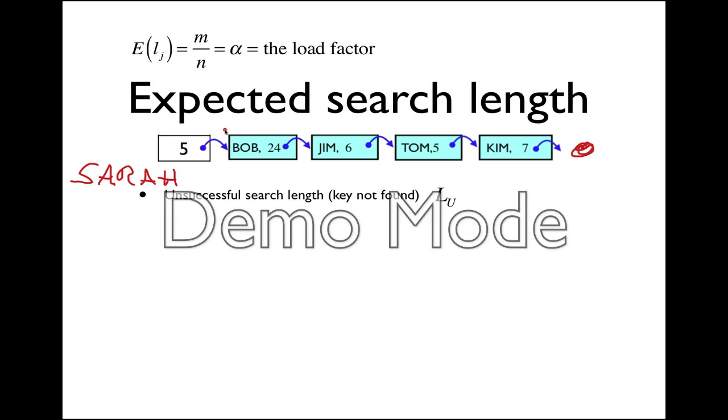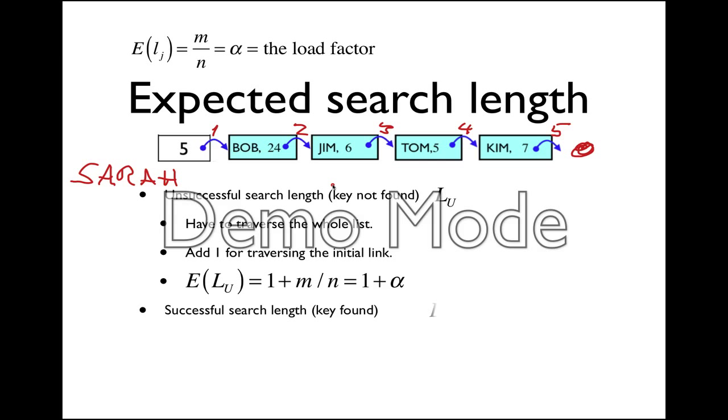How many links, how many pointers do we have to follow? One, two, three, four, five—and that's basically exactly one more than the length of the list. That means that we have to traverse the whole list, and we get that the expected length of our search is one plus the expected length of the list, which is one plus alpha.